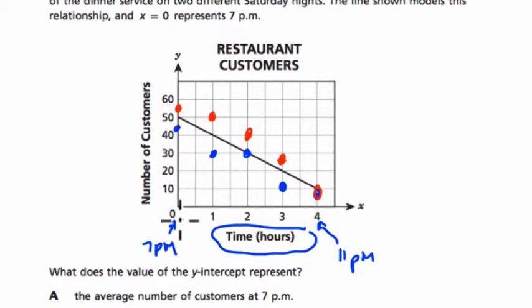So at 0 hours, 7 p.m., there's either 45 customers on one night and 55 on the other. At 8 o'clock, there's 30 on one night and 50 on the other. At 9 o'clock, there's 30 on one night and 40 on the other, and so on.